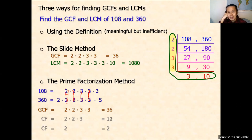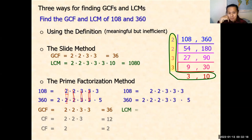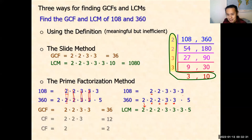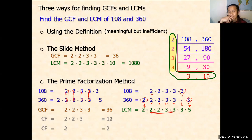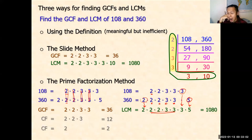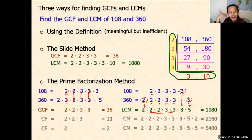To find the LCM using prime factorization, you take the common factors (written once) and multiply by all the leftover factors from both numbers. So it is the GCF times the remaining factor of 3 and then times 2 × 5 (which is 10), giving 1080. Of course, there are infinite common multiples — twice 1080, three times 1080, and so on — but the least common multiple is the first time they occur.